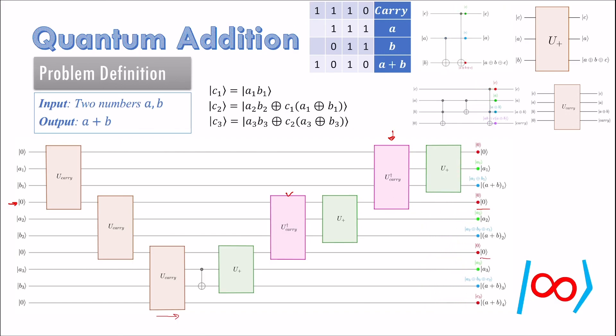This circuit uses 3N plus 1 qubits in total to compute the addition of A and B. In the next video, I'll describe quantum Fourier transform. Later, I'll use it to add 2 numbers using only 2N plus 1 qubits.